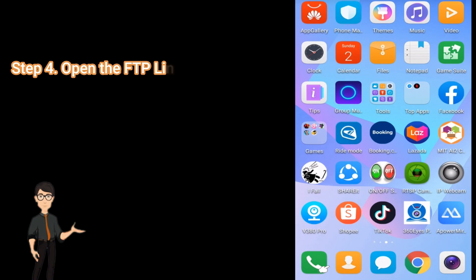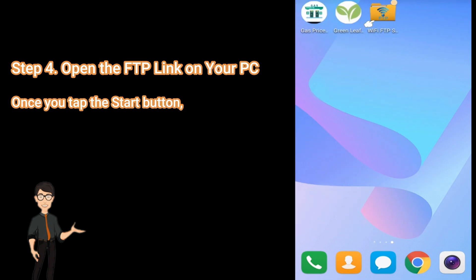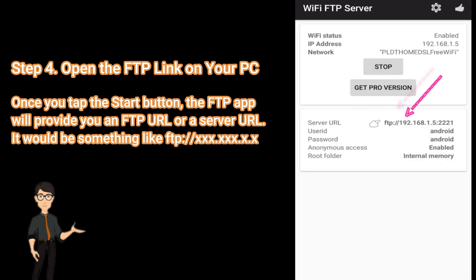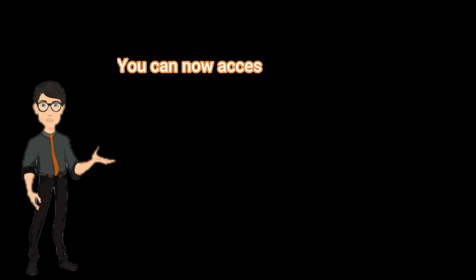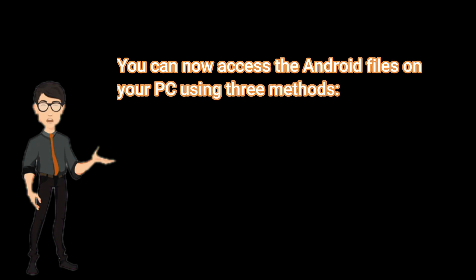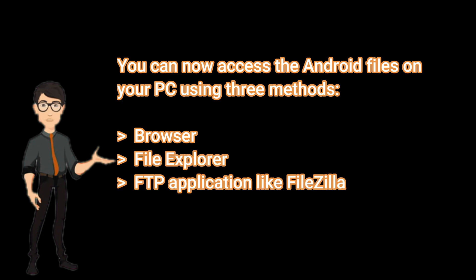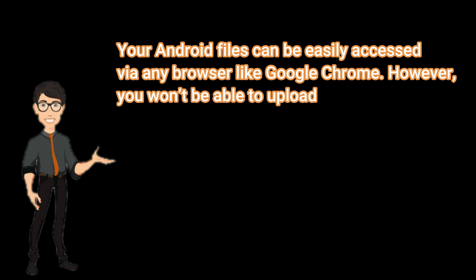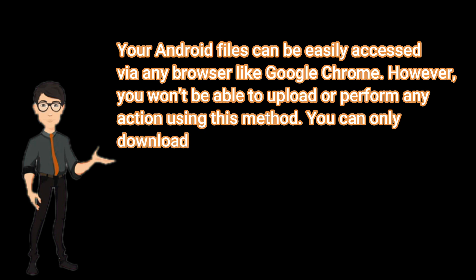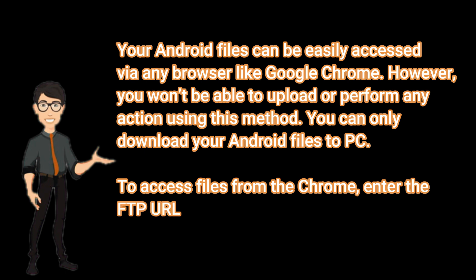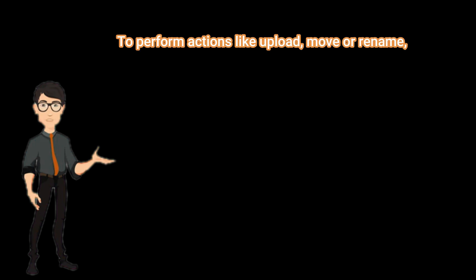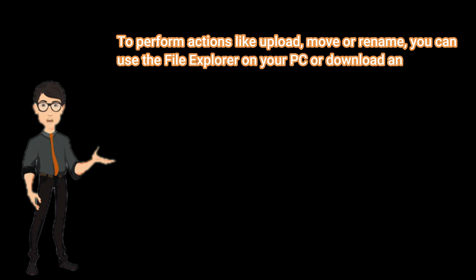Step 4: Open the FTP link on your PC. Once you tap the Start button, the FTP app will provide you an FTP URL or server URL — it would be something like ftp://192.168.x.xxxx. You can now access the Android files on your PC using three methods: Browser, File Explorer, or an FTP application like FileZilla. Your Android files can be easily accessed via any browser like Google Chrome. However, you won't be able to upload or perform any action using this method — you can only download your Android files to PC. To access files from Chrome, enter the FTP URL in the address bar and press Enter. To perform actions like upload, move, or rename, you can use File Explorer or download an FTP application like FileZilla.